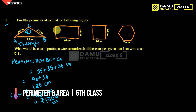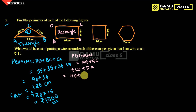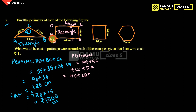Next, they have given a rectangle ABCD. The perimeter of a rectangle is AB plus BC plus CD plus DA. AB is 40 and BC is 20. In a rectangle, opposite sides are equal, so CD is also 40 centimeters and DA is opposite to BC, so DA is also 20 centimeters.